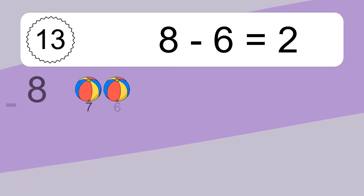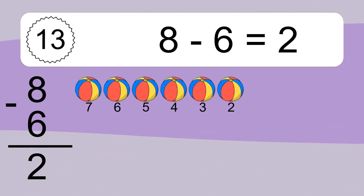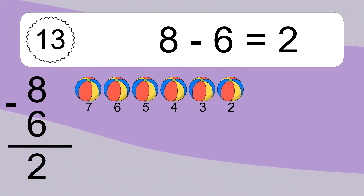8 minus 6 equals what? 8 minus 6 equals 2. Let's count it: 7, 6, 5, 4, 3, 2.